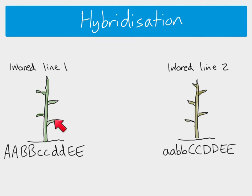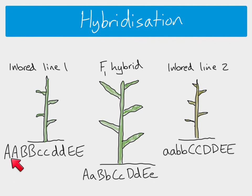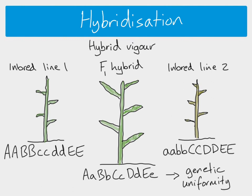If you breed these two together, what you end up with is called an F1 hybrid — the first generation hybrid. This plant ends up growing tall, strong, and vigorous — it grows way better than either of the two parent plants. Breeding these two homozygous plants together results in a plant which is heterozygous for most or all of its genes, taking the dominant allele from one parent and the recessive allele from the other, giving a big increase in heterozygosity.